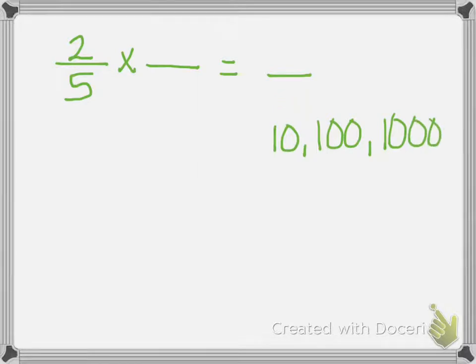I know I have two-fifths as my fraction. I know that five goes into ten, so I want this to become tenths. Five times what gives me ten? Well, five times two.